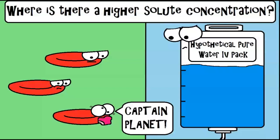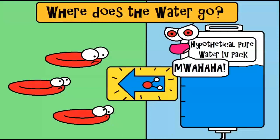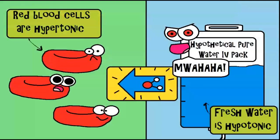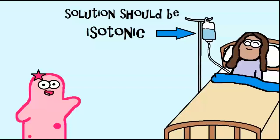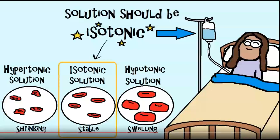So where does the water go? It goes to the area of higher solute concentration — inside the cells. The cells are hypertonic compared to the water in the IV tube because the cells have a greater solute concentration. The cells would swell with water and possibly burst. Exploding red blood cells are not fun. If a person needs fluids, they typically receive a solution that is isotonic to their blood plasma. Isotonic means equal concentration, so you wouldn't have any swelling or shrinking red blood cells — and that's a good thing.